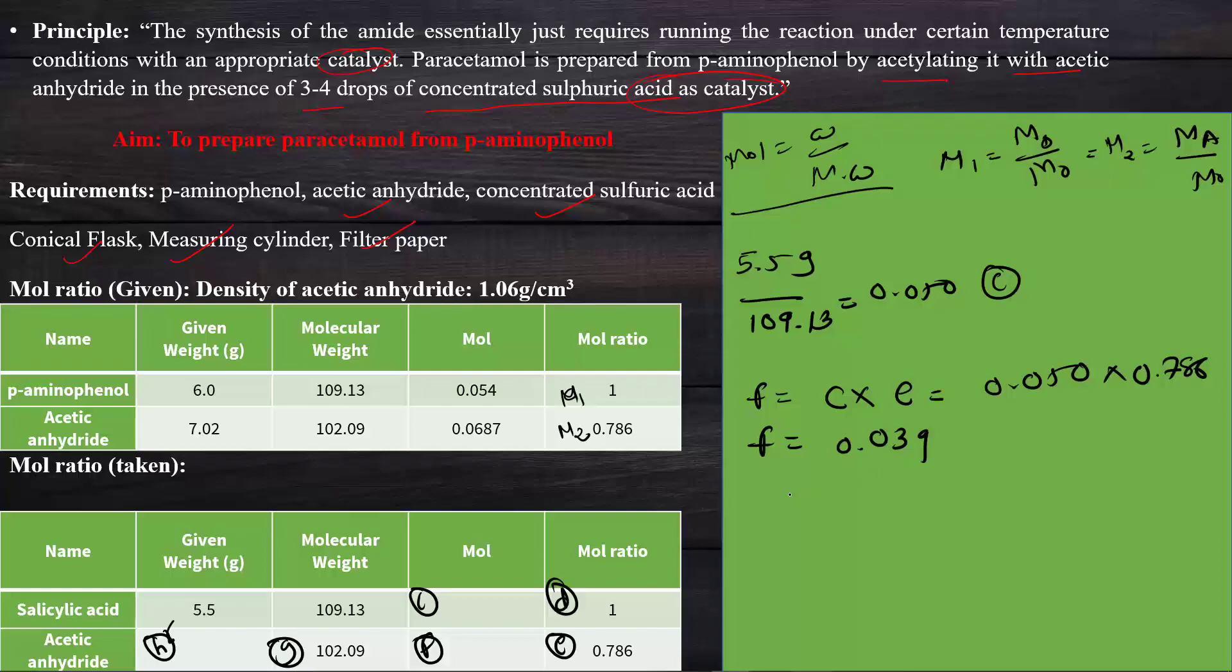When we multiply that mole with the molecular weight of 102.09, we get H, which is the given weight or weight of acetic anhydride we want to take, which is 4.04 grams. Then we divide by the density of 1.06 to get it in ml, so 3.81 ml is required of acetic anhydride for the reaction with salicylic acid to get the product para-aminophenol.